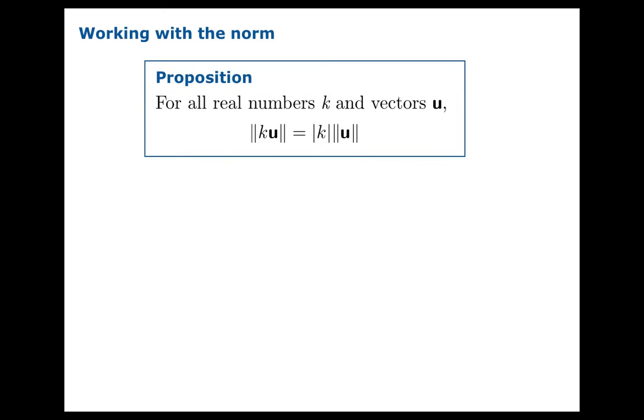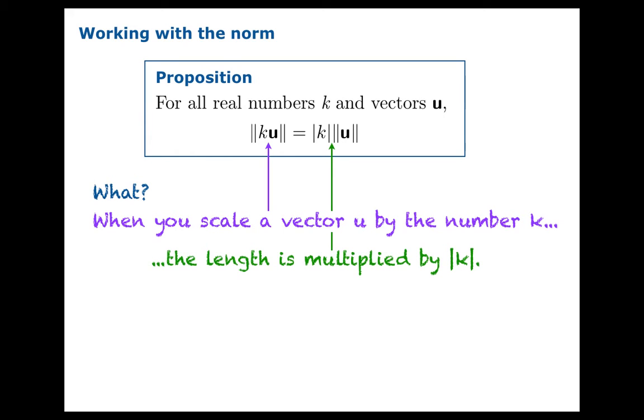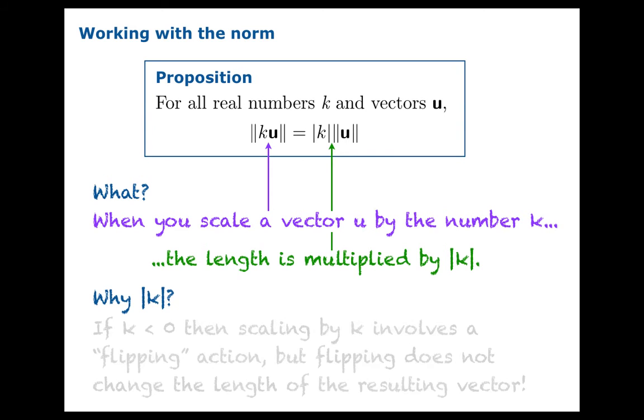A property that really helps is this one. For all real numbers k and vectors u, when you take the norm of the scaled vector ku, you get the absolute value of k times the norm of u. So what is this really saying? Just intuitively, when you scale a vector by a number k, the length is multiplied by absolute value of k.